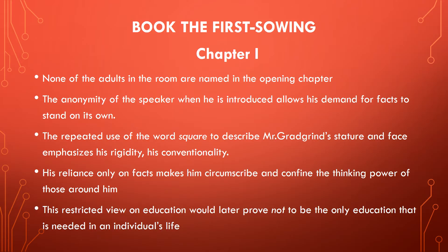When we read the first chapter, the personalities present in the room are not given any name. There is a reason behind this: the unknownness of the speaker allows his demand for facts to stand on its own. The opening sentence of the novel is: 'Now what I want is facts. Teach these boys and girls nothing but facts. Facts alone are wanted in life. Plant nothing else and root out everything else. You can only form the minds of reasoning animals upon facts. Nothing else will ever be of any service to them.'